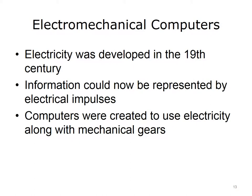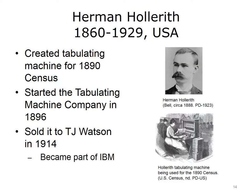In the 19th century, electricity was being developed. Electricity provided a much easier way to represent information by a series of electrical pulses and made computers much smaller. The first computers to use electricity also still used mechanical gears to do calculations. At the end of the 19th century, Herman Hollerith created the tabulating machine for the 1890 census.